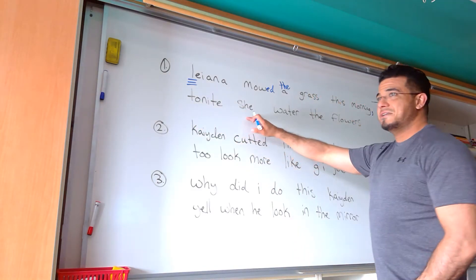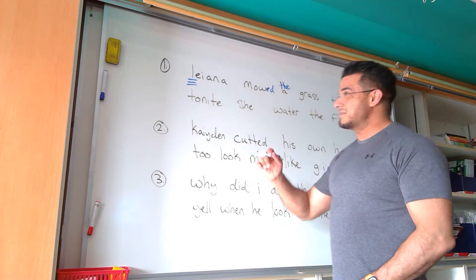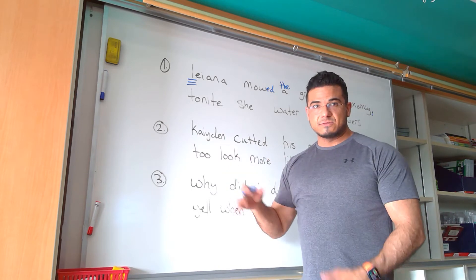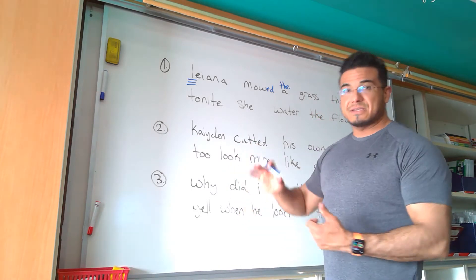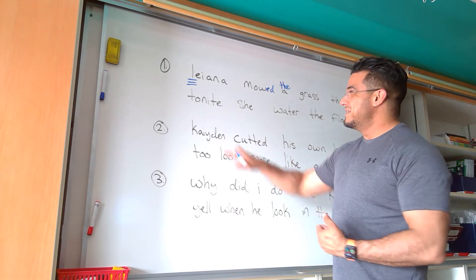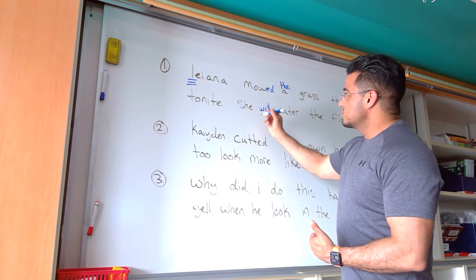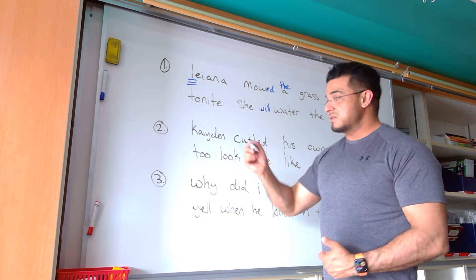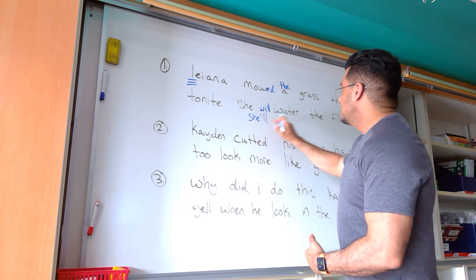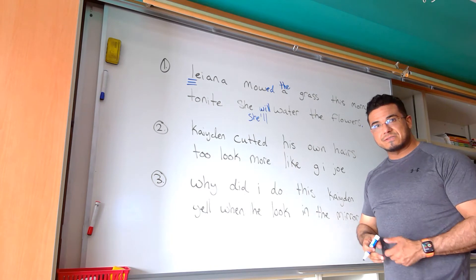Next: Tonight she watered the flowers. She hasn't done this yet, so we want something to suggest that it will happen — the word 'will.' So tonight she will, or if you want to use the contraction, you can join 'she' and 'will' using the apostrophe to make 'she'll water the flowers.' Period. And then we've completed sentence number one.